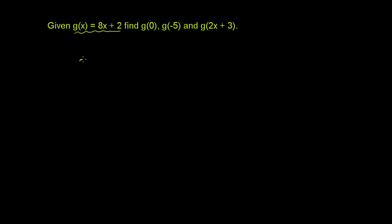They're saying: you give me any x, and you input it into my function g, and my function g will output — it will associate with that number x another number that happens to be 8x plus 2. This is one way to create an association.